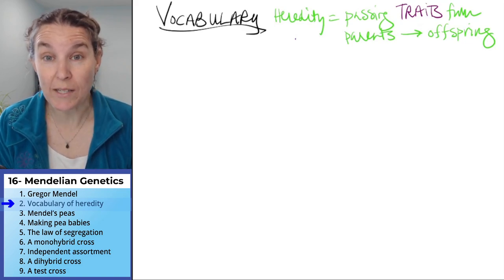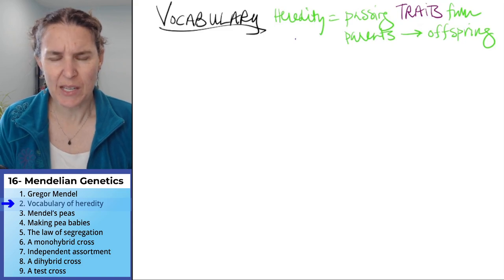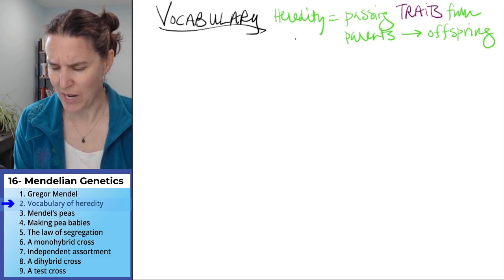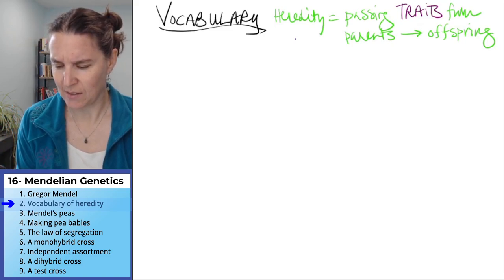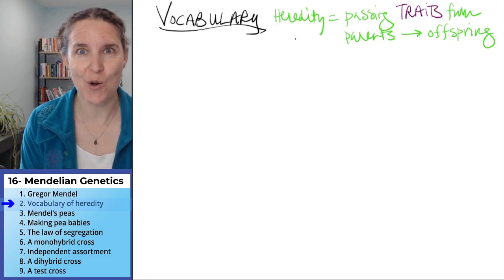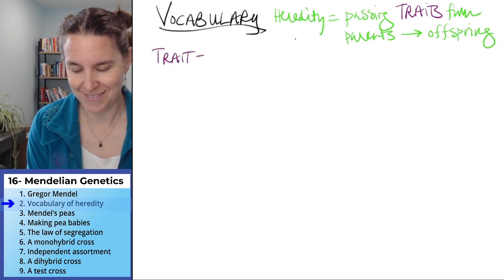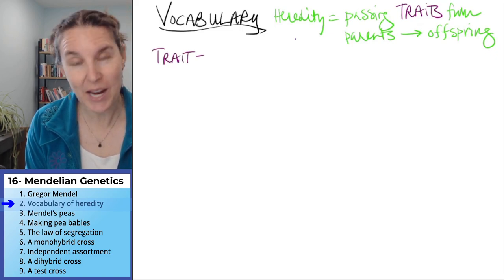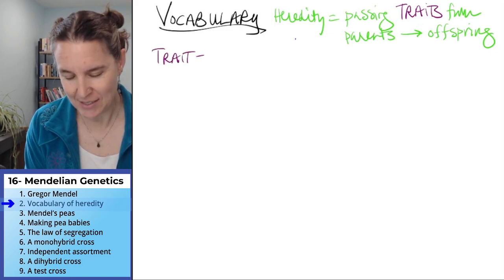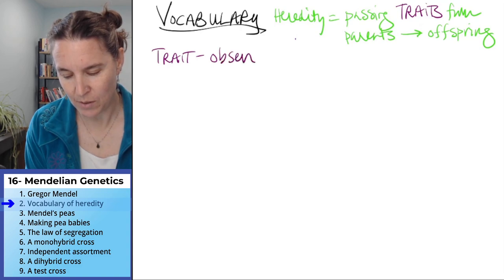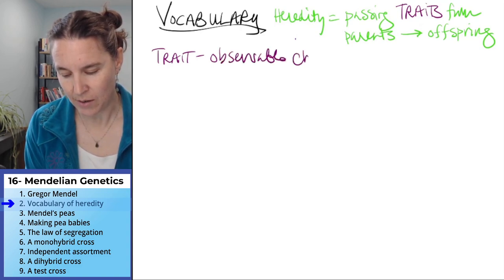What is not straightforward is what is a trait? Guess what our second vocabulary word is. A trait is an observable characteristic.